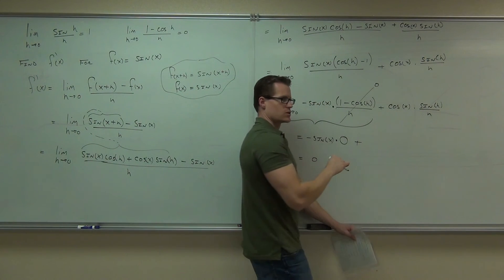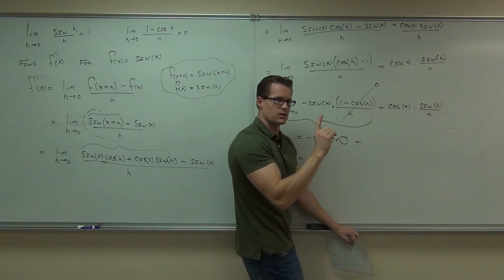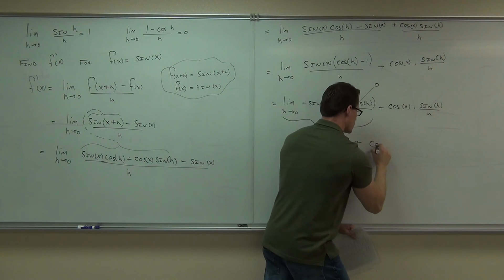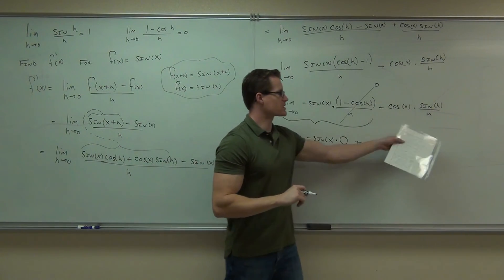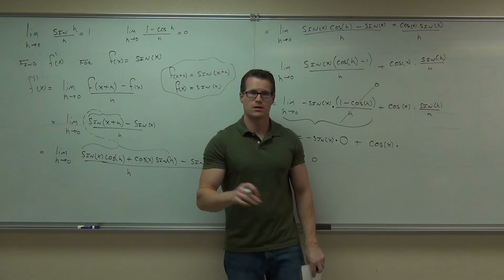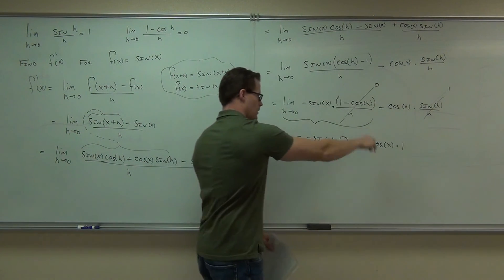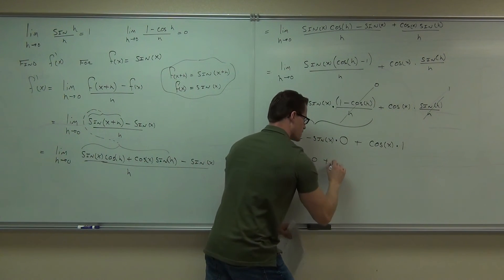What happens to the cosine x? Does it go to one? No. Cosine x stays the same, because it's an x that's not an h. Cosine x times, what's the limit of sine h over h? How much is that? One. Zero plus cosine x. Cosine x.